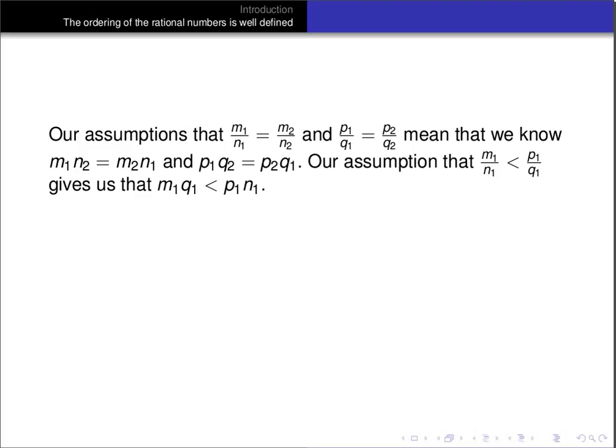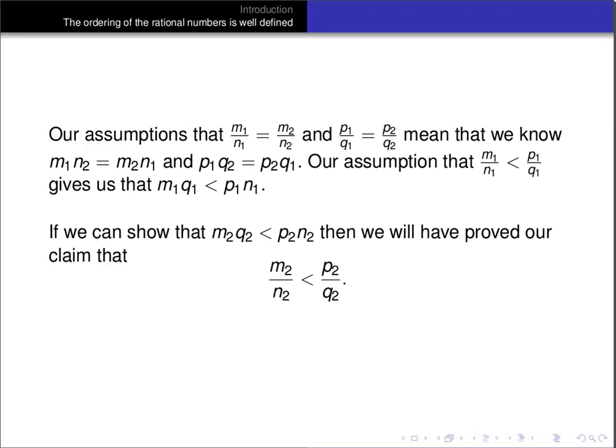Our assumption that m1 over n1 is less than p1 over q1 means, applying the definition of the order, that m1 times q1 is less than p1 times n1. Our goal is to show that m2 over n2 is less than p2 over q2, which is equivalent to m2 times q2 is less than p2 times n2. So if we can show that m2 q2 is less than p2 n2, then we've proved our claim and shown that the order is well-defined.